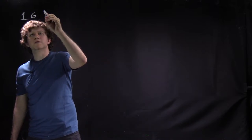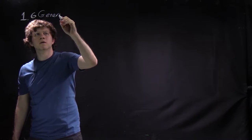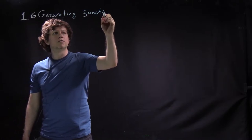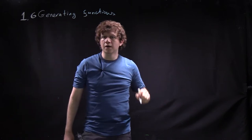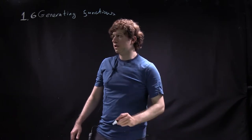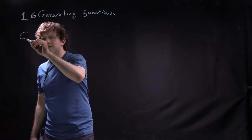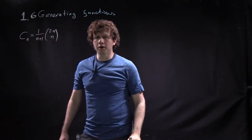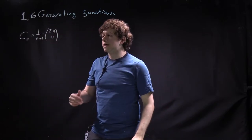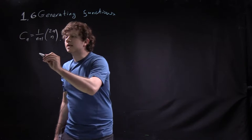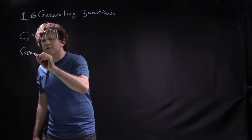This is Lecture 1.6, and I will talk about generating functions. This is the last lecture about combinatorics, and I want to discuss another approach to proving a formula for Catalan numbers. We proved last time that c_n equals 1 over (n+1) times C(n, n), and the proof was quite involved with combinatorics of paths on a lattice. I want to give another proof using the idea of a generating function.